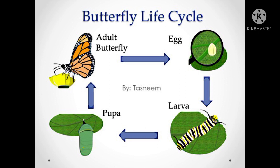In the larva stage, you can see a worm. This worm is known as the caterpillar — the larva of a butterfly is known as the caterpillar. But for the housefly, it is known as maggot (M-A-G-G-O-T). So the larva stage of the butterfly is the caterpillar.